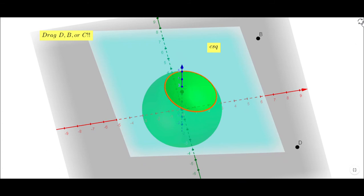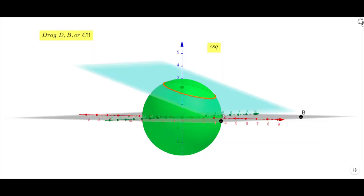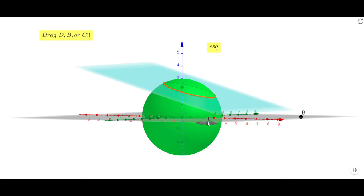You can go back to the original picture by clicking the double arrows, and you can also drag D, B, or C to see what's going on. I'm going to start with D. You notice when I drag point D, I can get some other cross sections.